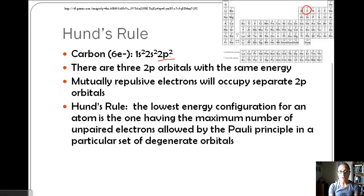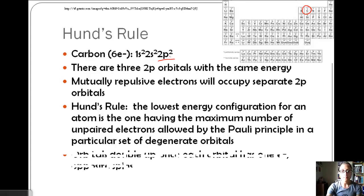Hund's rule says that the lowest energy configuration, because we're always wanting the lowest energy for an atom, is the one having the maximum number of unpaired electrons allowed by the Pauli principle in a particular set of orbitals. This means that they're going to occupy individual orbitals within that energy level before doubling up. Orbitals will double up once each orbital has one electron.